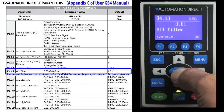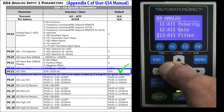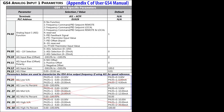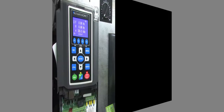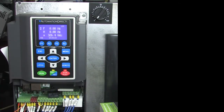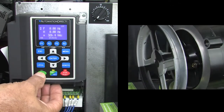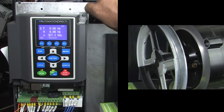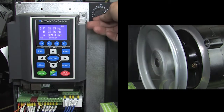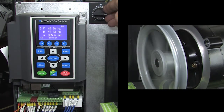We are using a potentiometer so we really don't need any additional filtering, and you only use this stuff if you want to modify the curve. That's it. If I tell the drive I want to use the local controls and enable it, sure enough, now I can control the motor speed from the potentiometer.